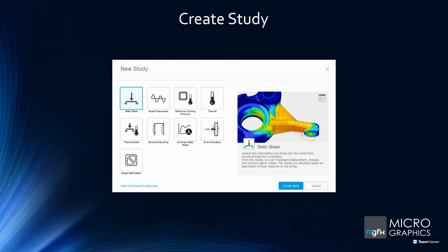That brings up a new study dialogue. You can choose any study type. There's also an electronics cooling option in preview — one of the nice things about Fusion 360 is that they offer previews where you can test features and give feedback to Autodesk. You're getting a feature that's maybe 80% working, and your feedback helps improve it to match your design workflow.